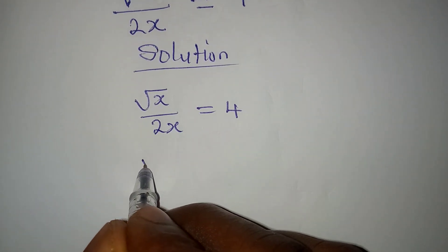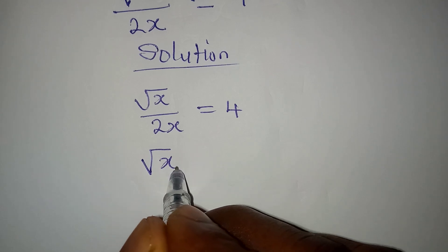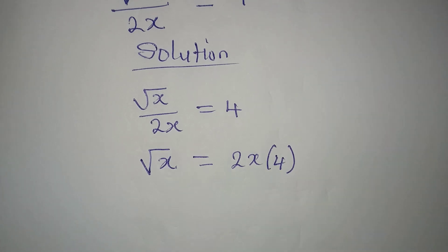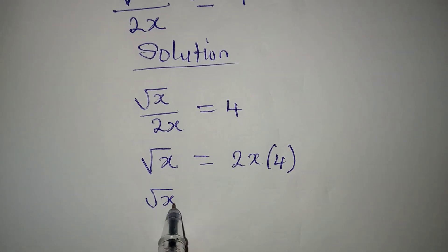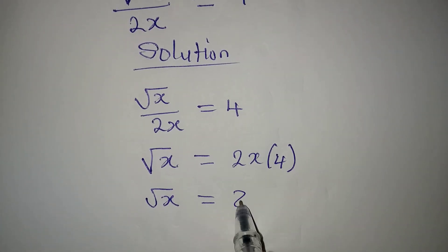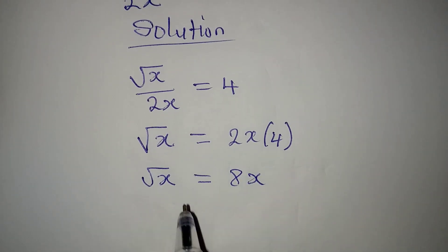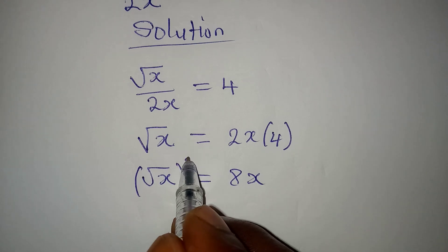It's easy. Square root of x is equal to 2x multiplied by 4. Square root of x is equal to 8x. Then the next thing is to square both sides.